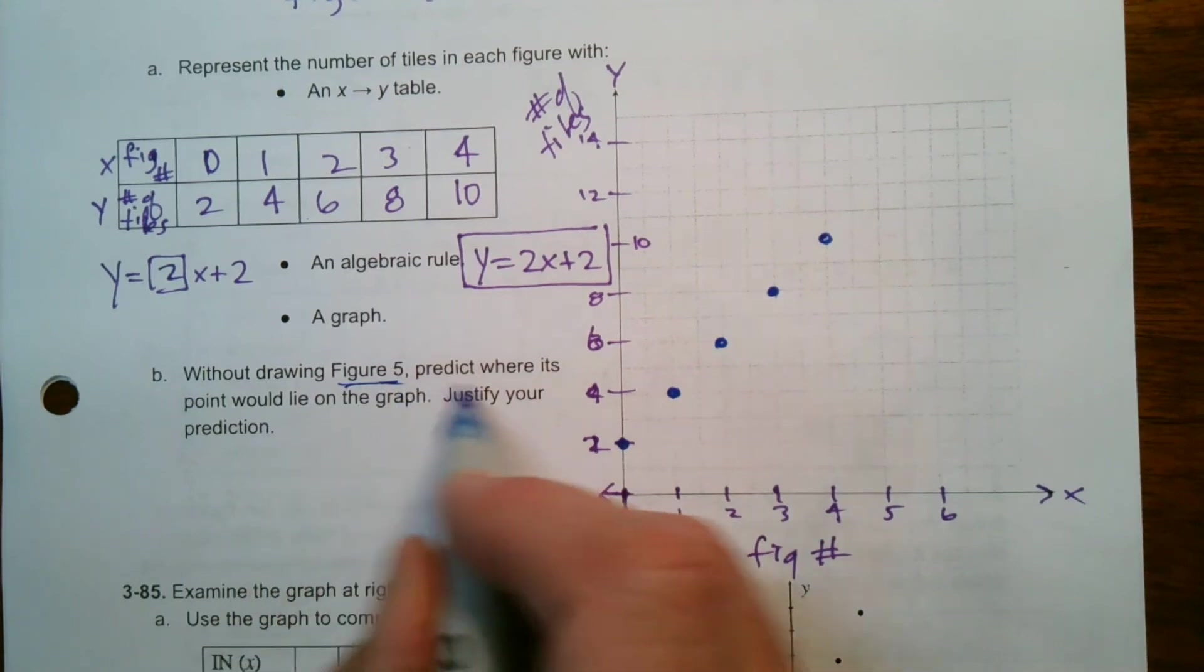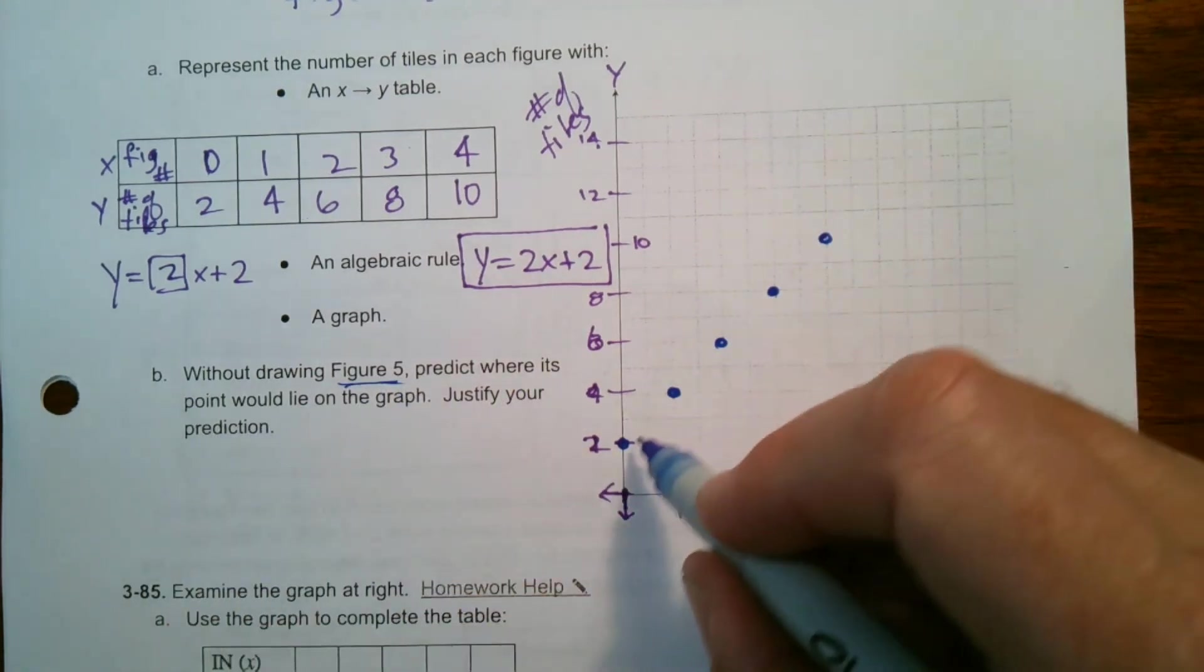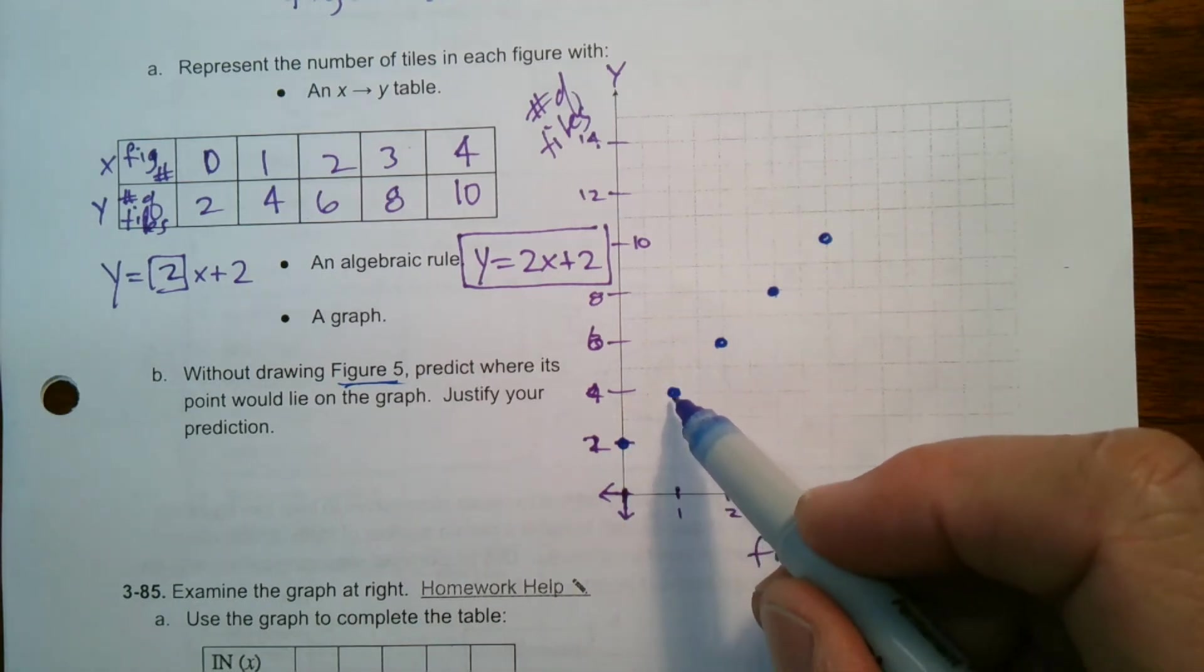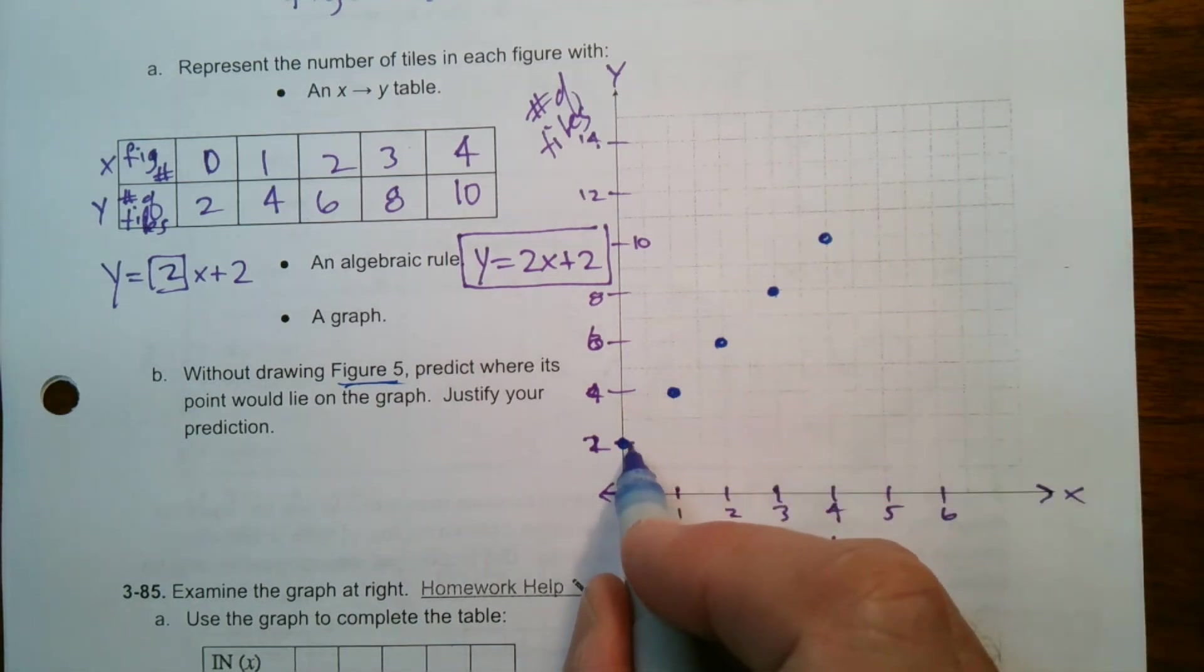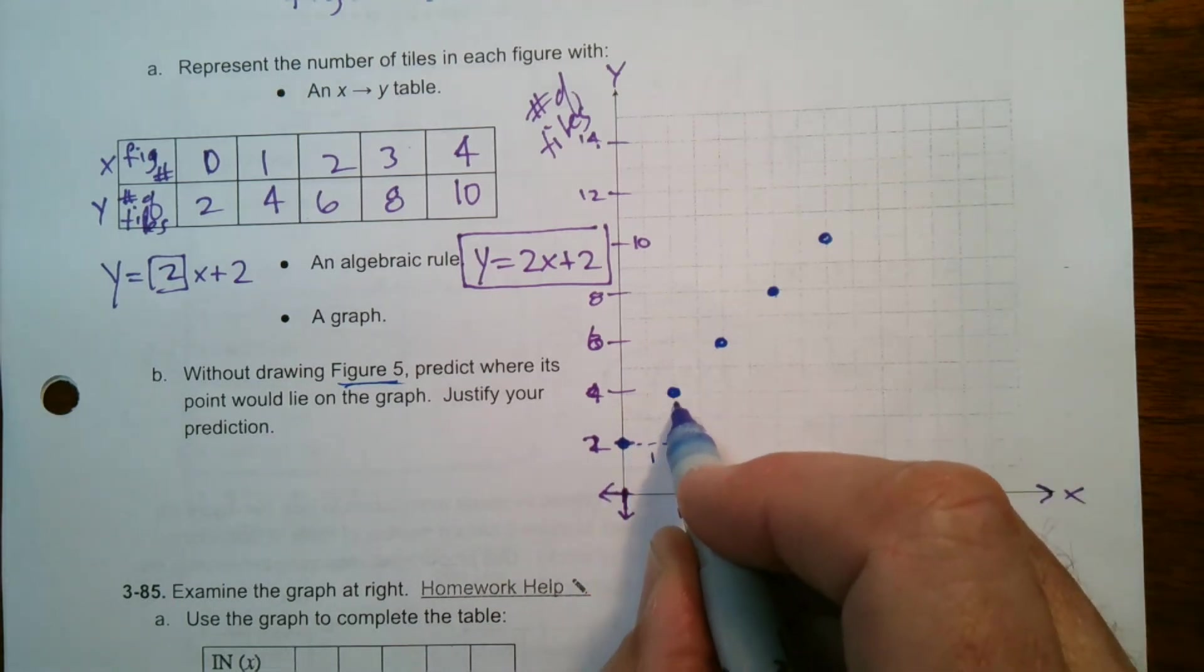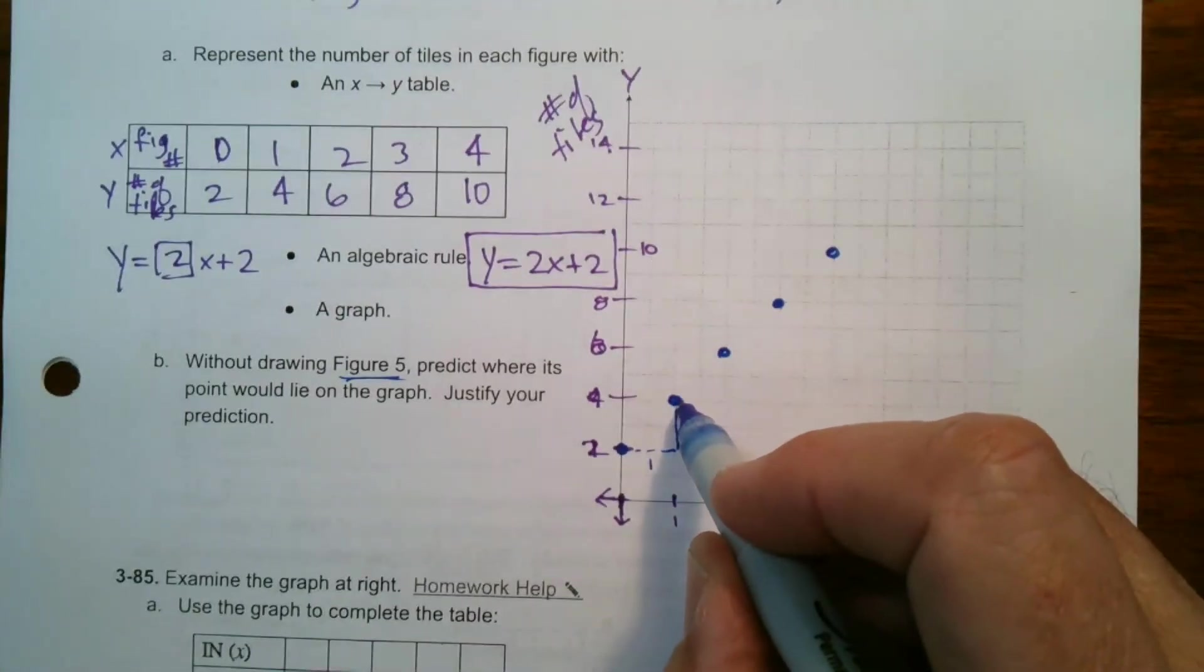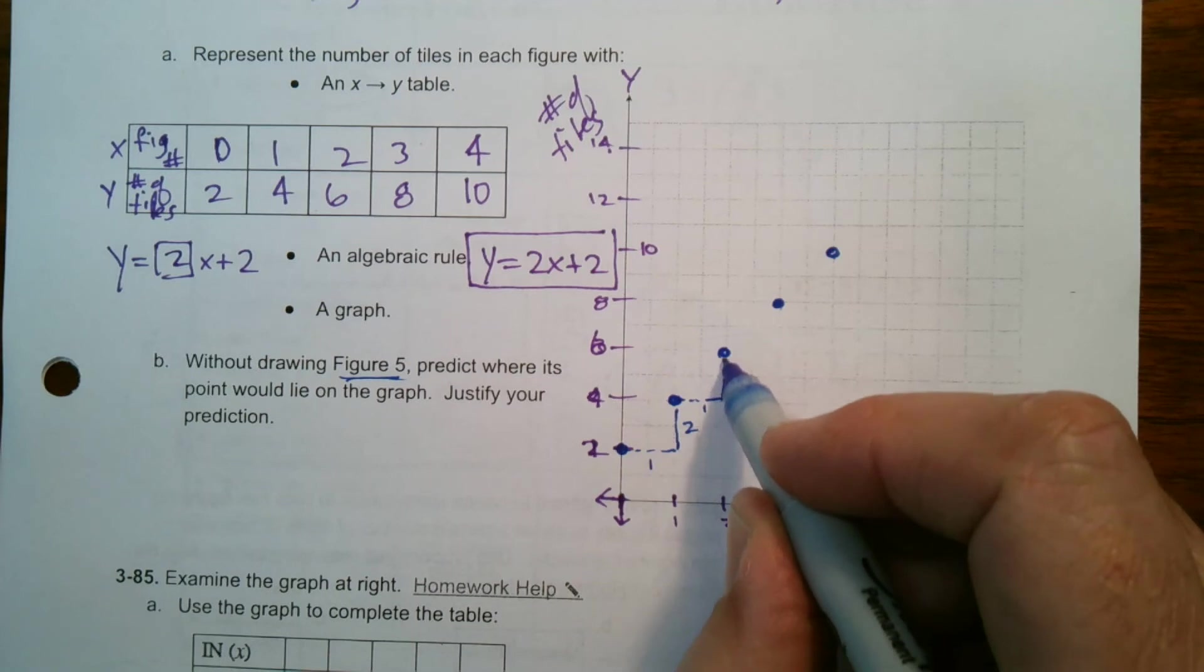So if I think about where my pattern, I see this linear pattern. So it says without drawing figure five predict where your point would lie on the graph. So if you think about this pattern, what's happening every figure number? I'm growing one, growing two tiles. So here's every figure number, this grows by one and then this grows by two. That's my pattern of growth. This grows by one and then this grows by two.